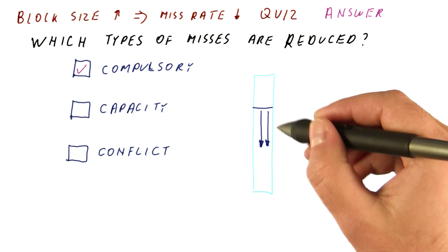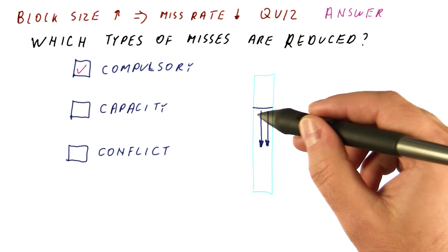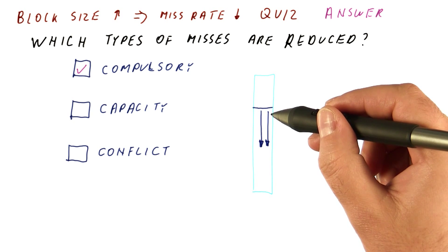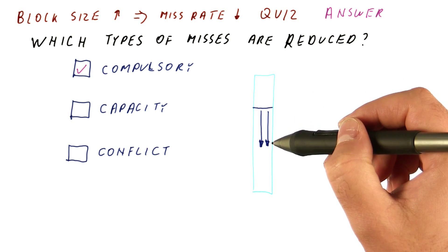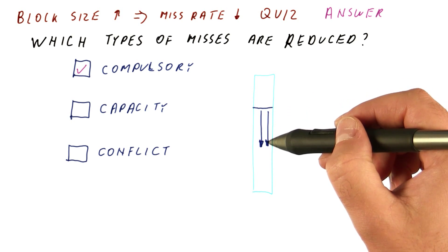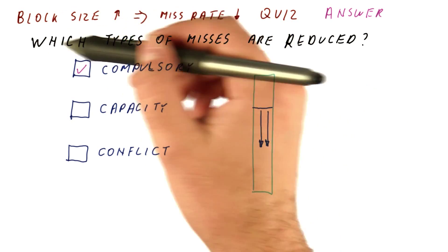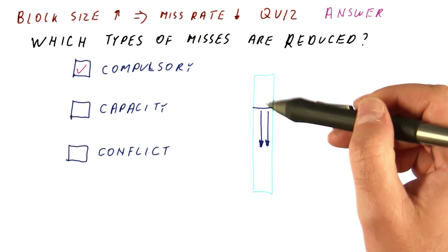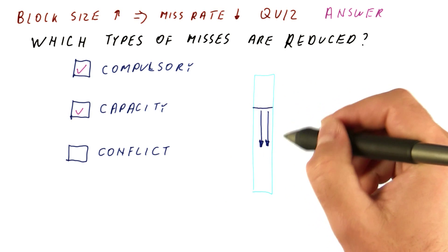But how many misses we will have for this array depends on the block size. With smaller blocks, the same size array would be occupying more blocks. With larger blocks, we will have fewer blocks. The number of misses will be equal to the number of blocks. So if we increase the block size, and our miss rate goes down because there is plenty of spatial locality, we are also reducing the number of capacity misses.